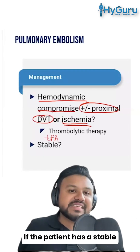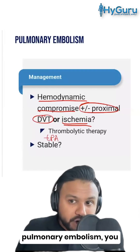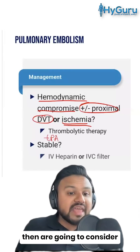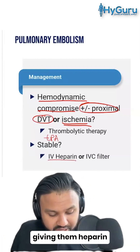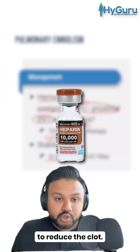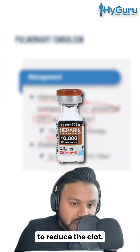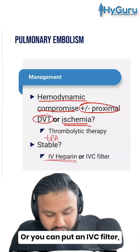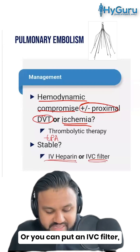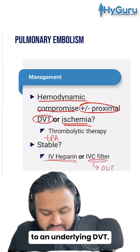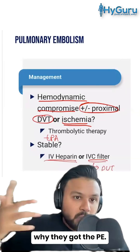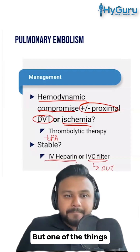If the patient has a stable pulmonary embolism, you then are going to consider giving them heparin to reduce the clot, or you can put in an IVC filter, especially if it's due to an underlying DVT — that's the reason why they got the PE.